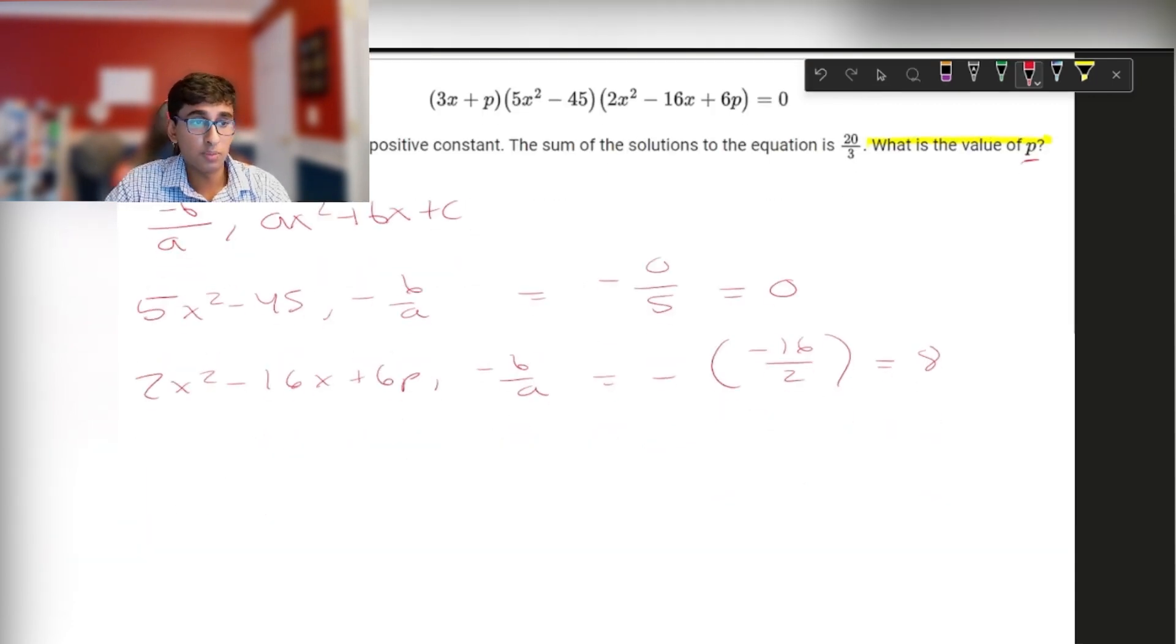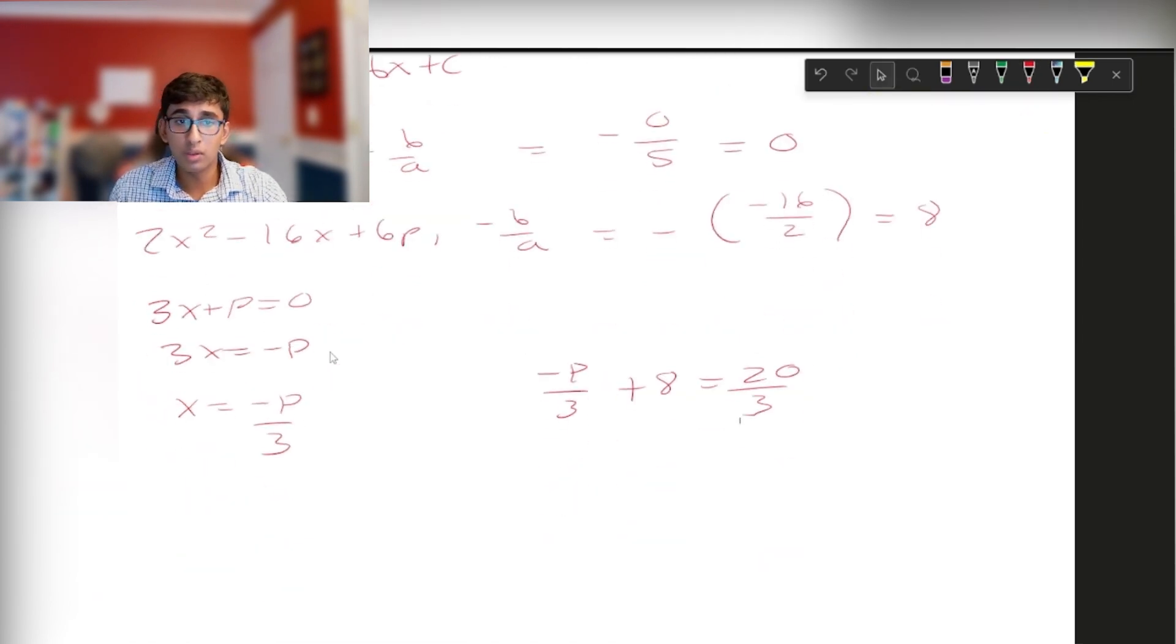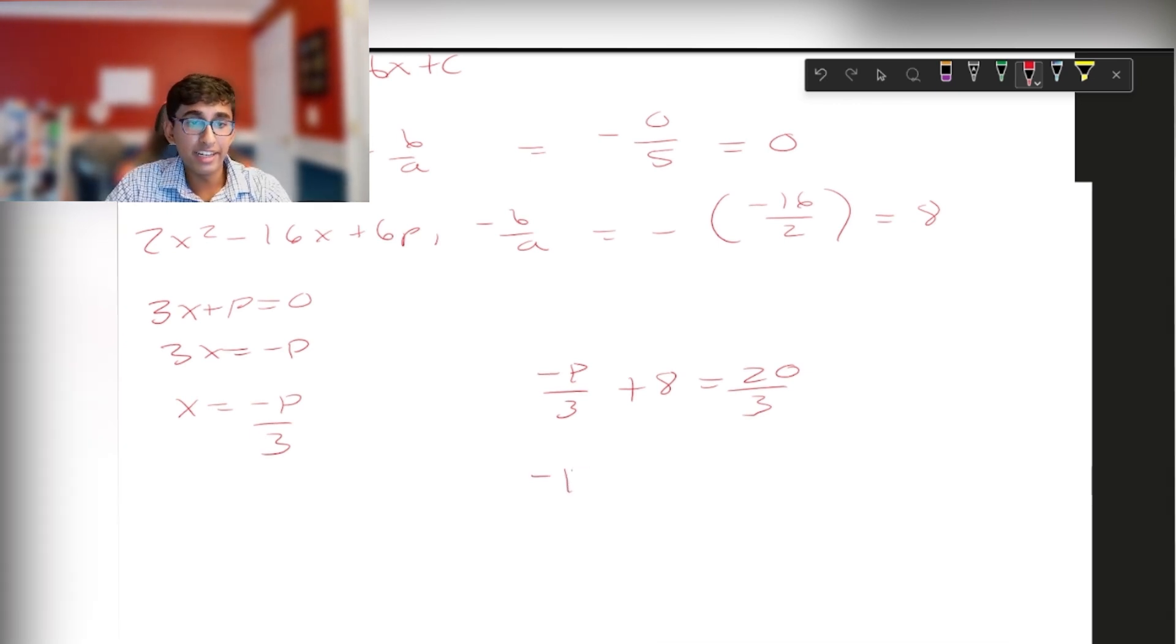However, we still have one more component, which is our 3x plus p. So 3x plus p equals 0, since it's one of our solutions. Let's isolate the variable x. So 3x equals negative p, x equals negative p over 3. The question says that the sum of the solutions is equal to 20 over 3. So we can set up the equation, negative p over 3 plus 8 equals 20 over 3. Personally, I wouldn't want to solve this with the fractions. So let's multiply the entire equation by 3. In doing so, we get negative p plus 24 equals 20. Now we just have to solve for p. Negative p equals negative 4. p equals 4.